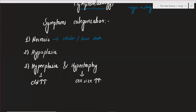Another term is hypoplasia. What do you think about hypoplasia? What does the hypo prefix mean? Hypo means low — very good. Hypoplasia is low, and hyper is high. So hypotension is low blood pressure, and hypertension means high blood pressure.